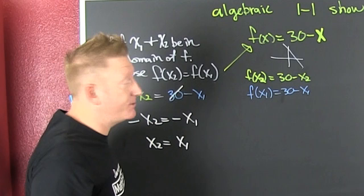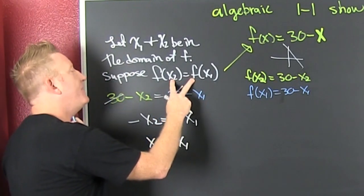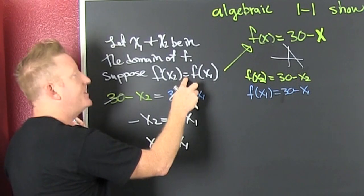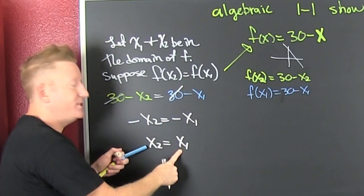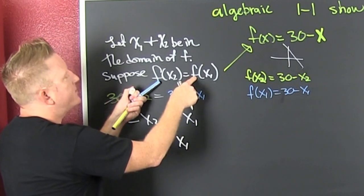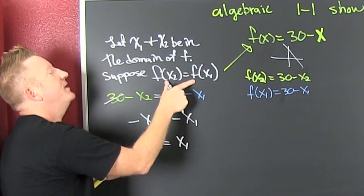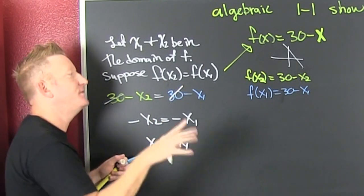What does that show? That shows that your function was indeed 1 to 1. Why? Because you set the two y values equal to each other, and that only happens if the two x values were equal to each other. So each second element corresponds to exactly one first element. The only way the y values are equal is if the x values is equal now.